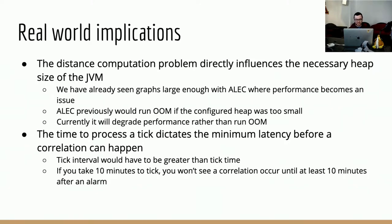The distance computation problem causes two issues when applied to a large network topology. Firstly, since we cache all the results, the heap size and allocation needs grow very quickly as a result of a large graph. Previously we found that large graphs would cause the JVM to crash due to running out of memory unless we configured it with a large enough heap. For now, we've addressed that by choosing to sacrifice performance when under memory pressure rather than crashing the JVM, by discarding cached entries.